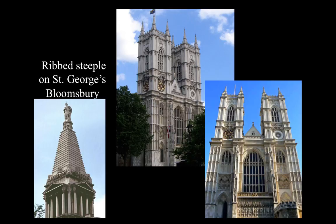Hawksmoor really broke the typical mold of the architect of the time, combining different styles of architecture to create breathtakingly unique designs, such as the ribbed steeple on top of St. George Bloomsbury Cathedral, which had never previously been seen in England or other European countries. In my opinion, it was his lack of traditional schooling that gave him the ability to work strictly with what he observed and his personal ideas, creating entirely new forms of architecture free from the stereotypes of traditionally correct Gothic works. Hawksmoor was chief architect on the Westminster project and upon Sir Wren's passing, he took over as Abbey Surveyor in 1723.